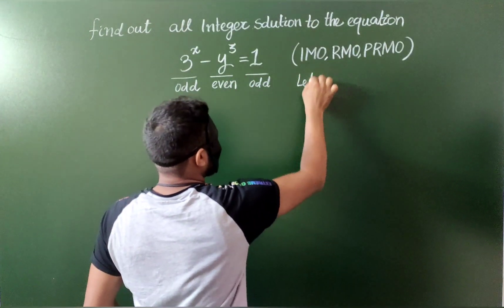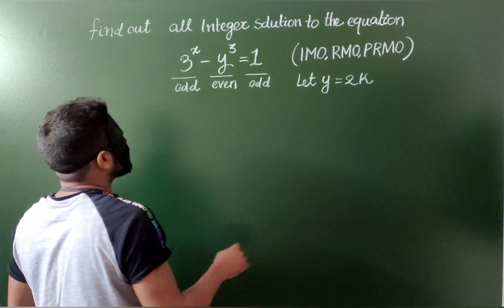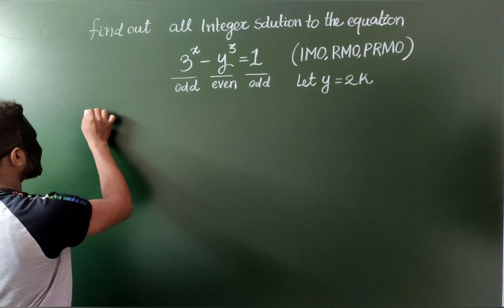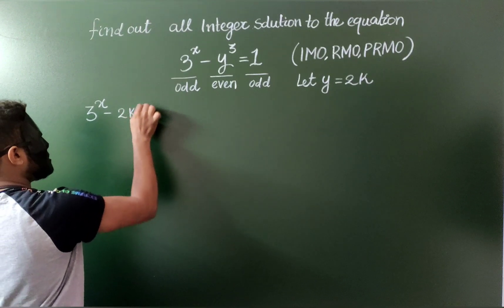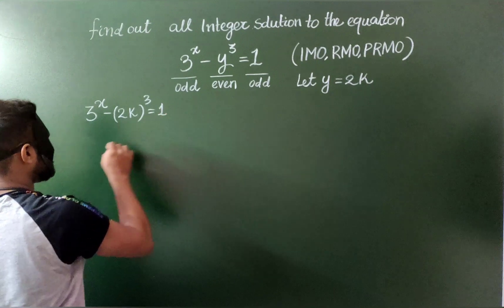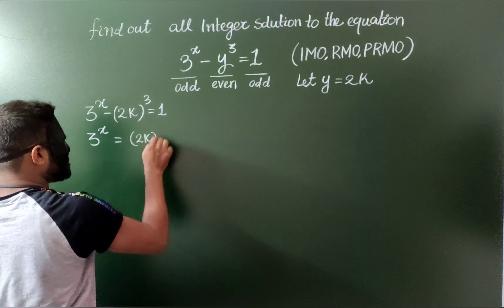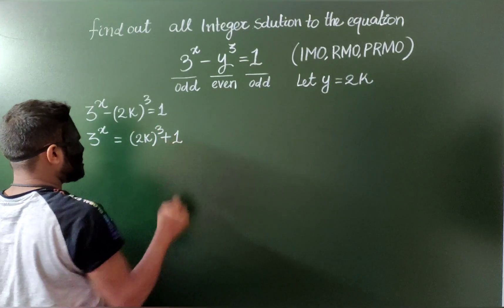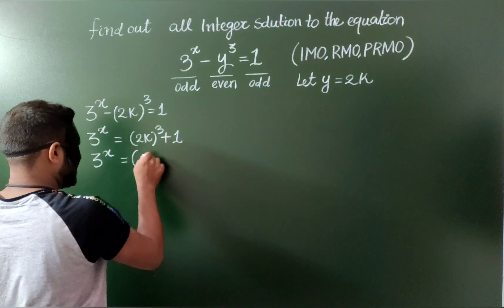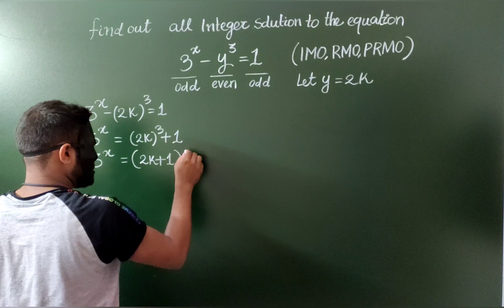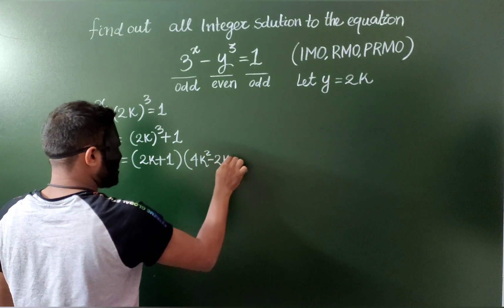So let y is equal to 2k for some integer k and rewrite this question again. This gives me something like 3 to the power x minus 2k cube is equal to 1, and then 3 to the power x is equal to 2k cube plus 1. And using a cube plus b cube formula, I can write, let's separate this. This gives me 2k plus 1 and 4k square minus 2k plus 1.